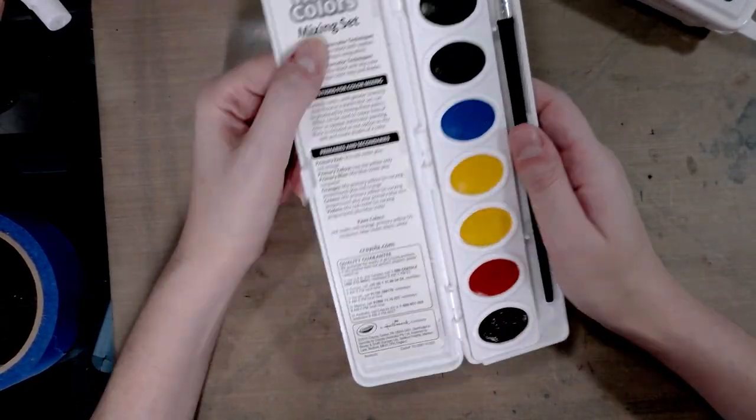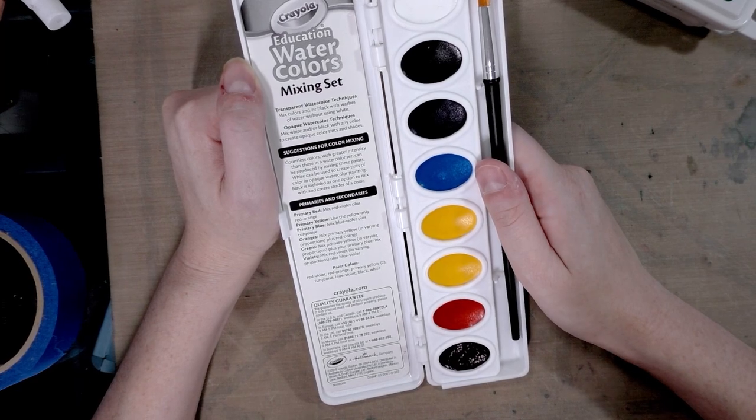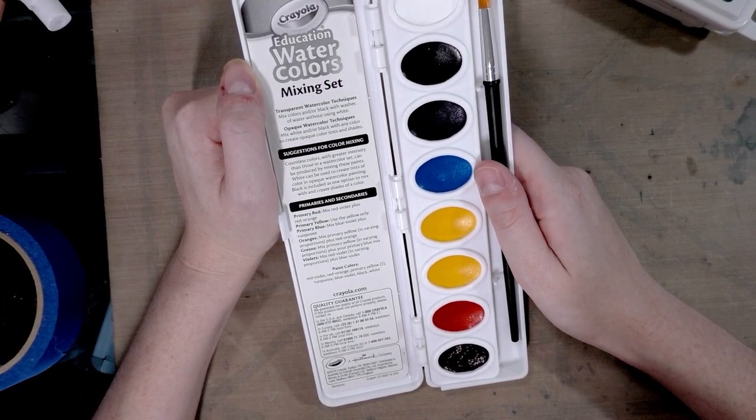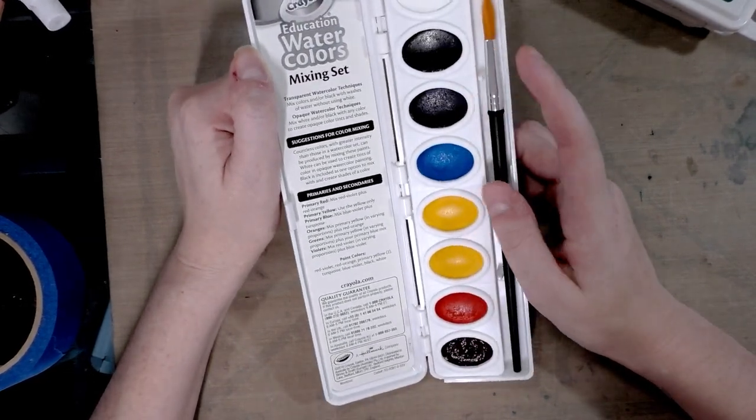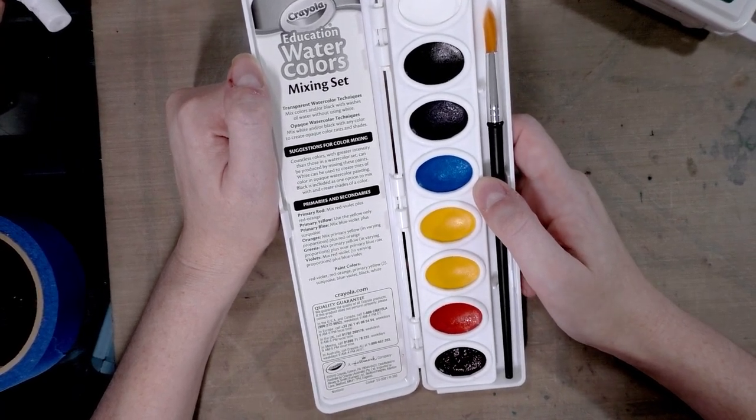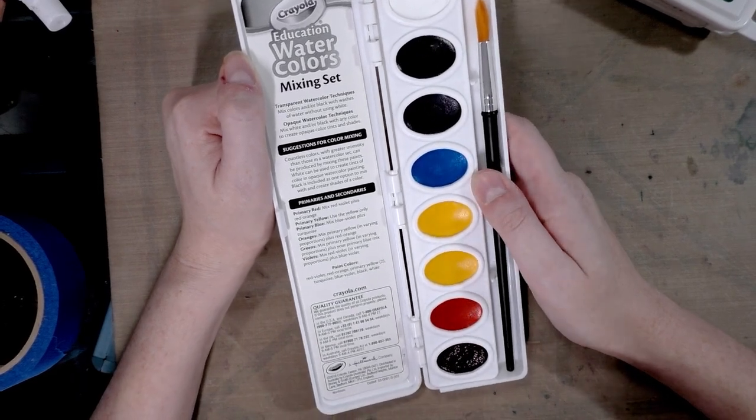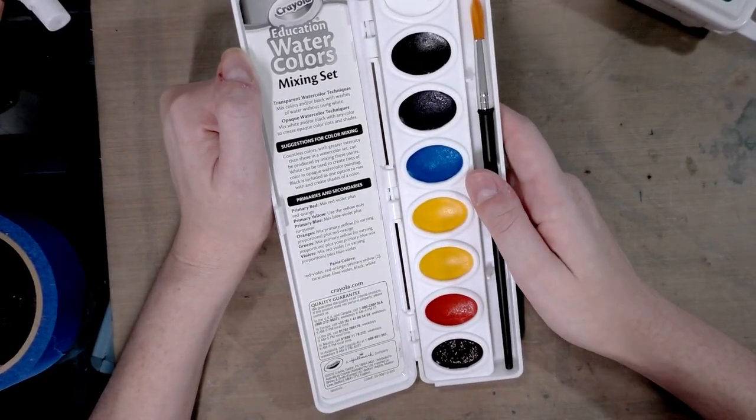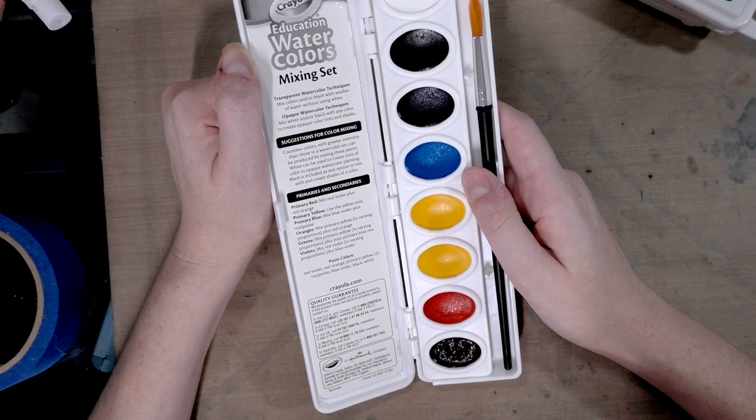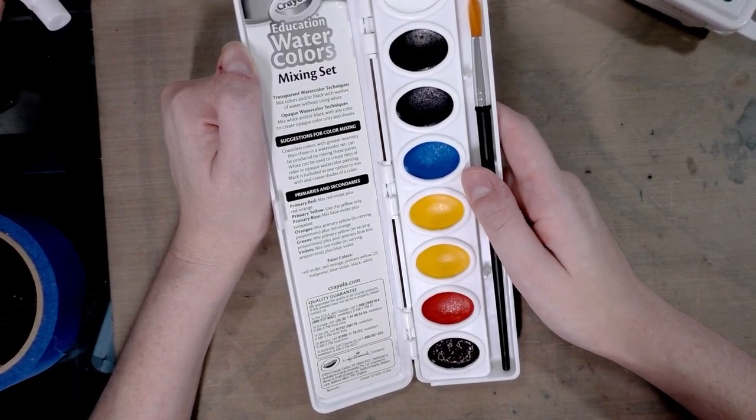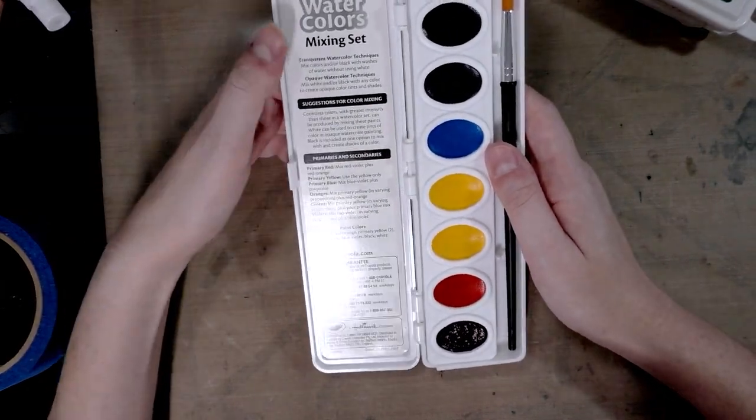So the literature that came with this. Crayola Education watercolors. Mixing set. Transparent watercolor techniques: Mix colors and or black with washes of water without using white. Opaque. So the white's to make these opaque. More like wash. Opaque watercolor techniques: Mix white and or black with any color to create opaque color tints and shades. Suggestions for color mixing: Countless colors with greater intensity than those in a watercolor set can be produced by mixing these paints. White can be used to create tints of color in opaque watercolor painting. Black is included as one option to mix in with and create shades of color. So basically they just repeated what they said.